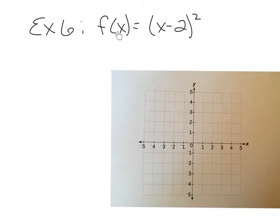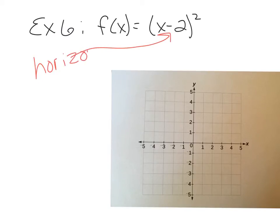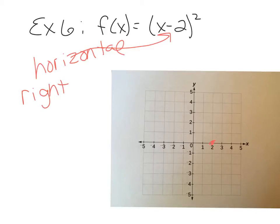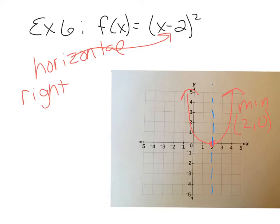Example 6 is on page 245: f of x equals x minus 2, squared. The minus 2 is inside the square, so this is a horizontal shift. Because it's a minus, it goes in the right direction — the horizontal shift is opposite the sign, so this shifts the vertex right 2 units. There are no negatives on x squared, so the parabola opens up and the vertex is a minimum. Its coordinates are 2, 0. The axis of symmetry is x equals 2.